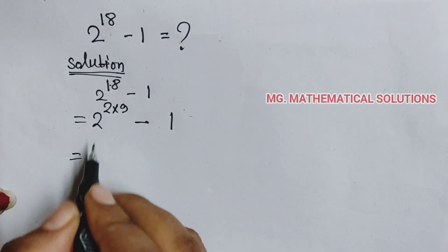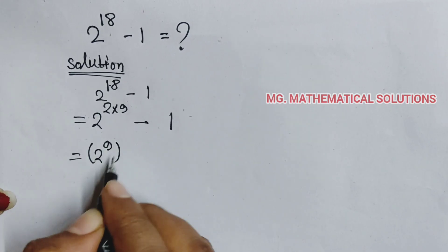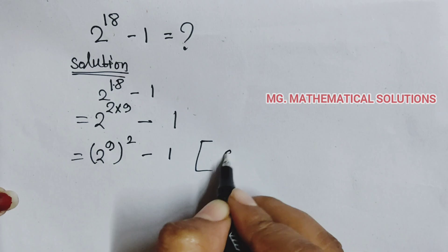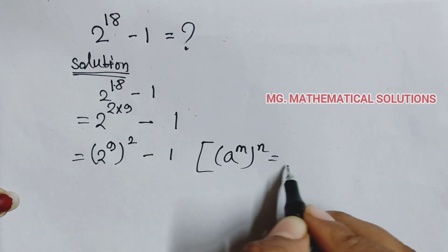Now this term we can write as 2 to the power 9 whole to the power 2 minus 1. Here we use the formula a to the power m whole to the power n equal to a to the power m into n.